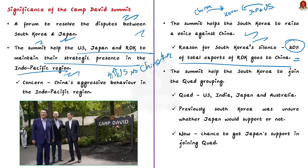Fourthly, the summit may help South Korea join the Quad grouping, which consists of the US, India, Japan and Australia. South Korea is interested in joining the Quad but was unsure whether Japan would support this, because of their many unresolved historic issues. But after the Camp David summit, tensions between Japan and South Korea are coming down, so there is a chance that South Korea will become a member of the Quad.